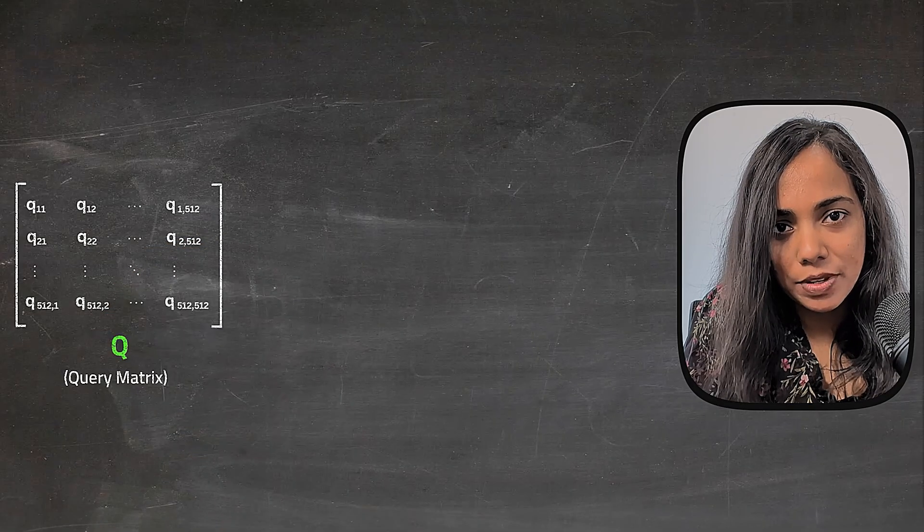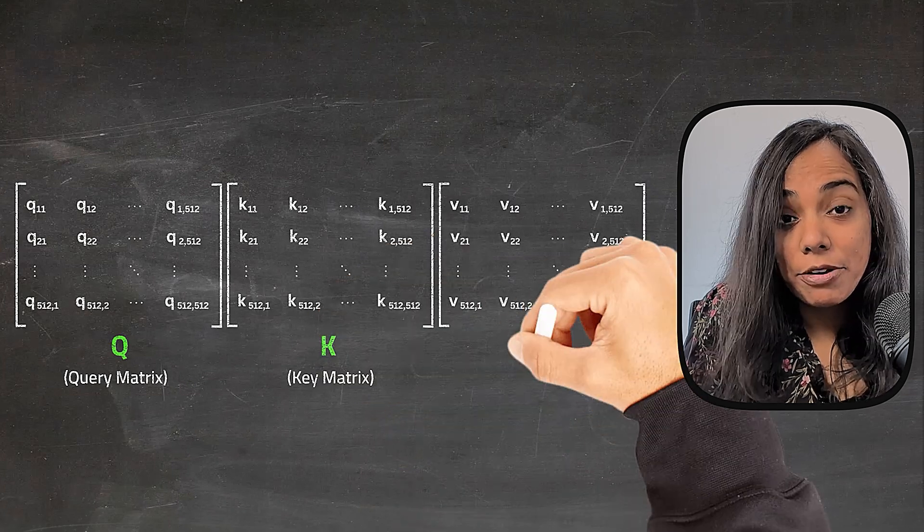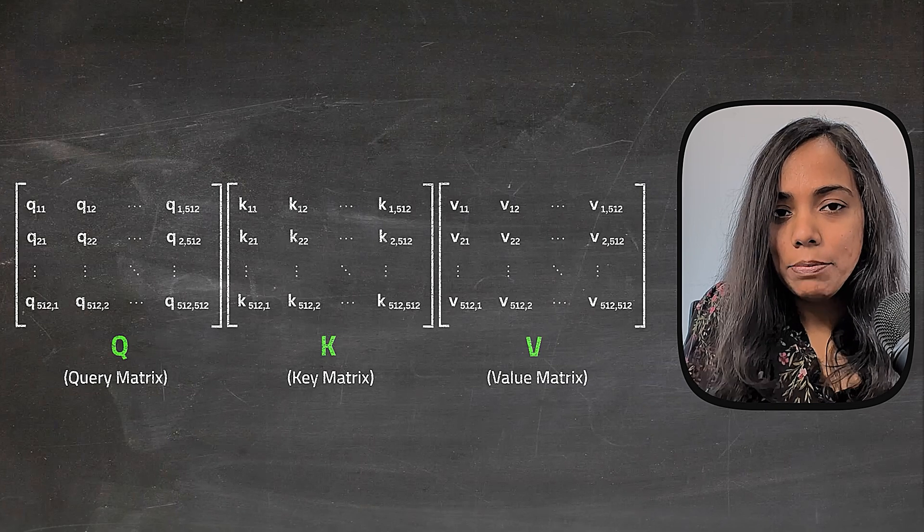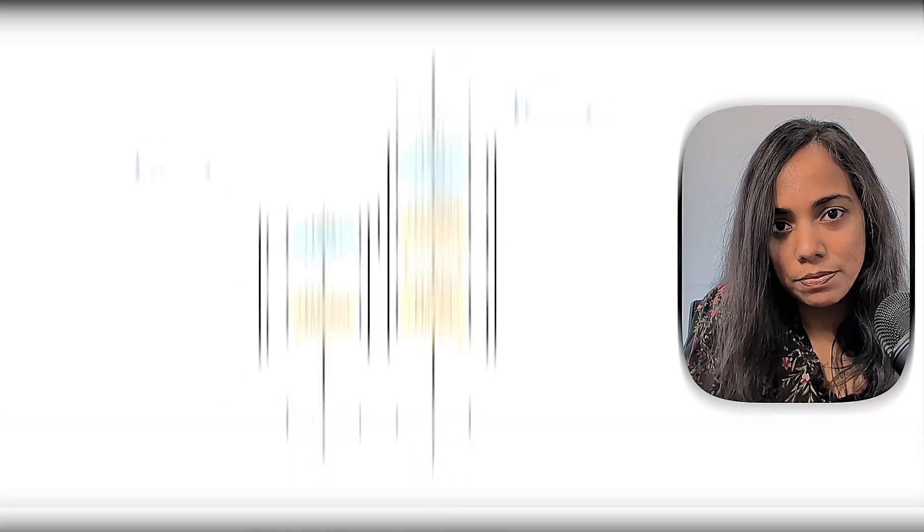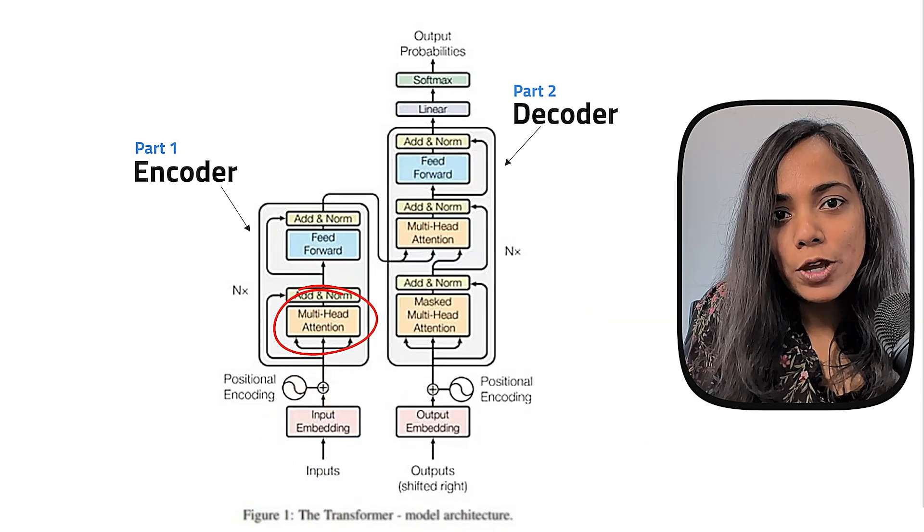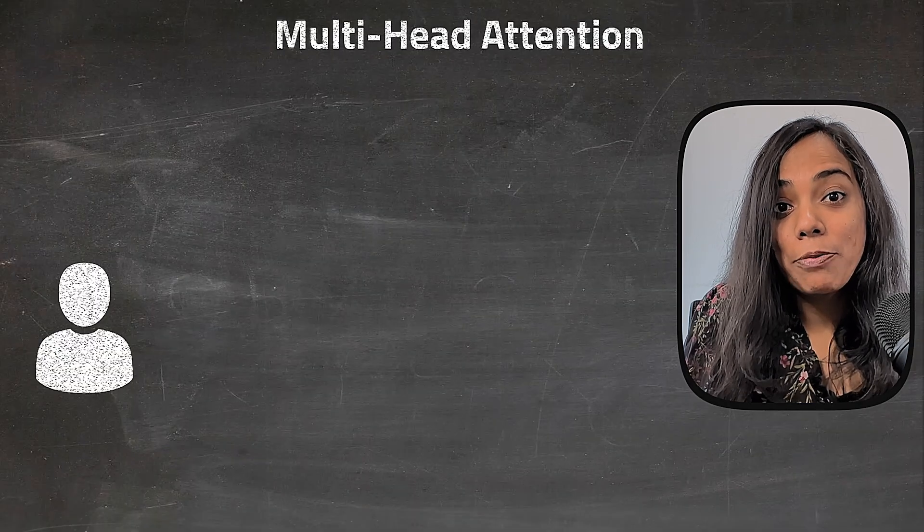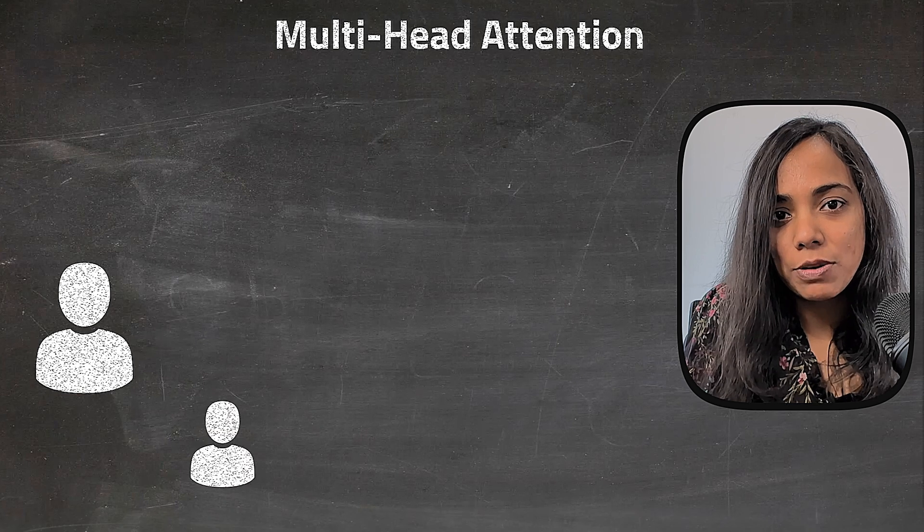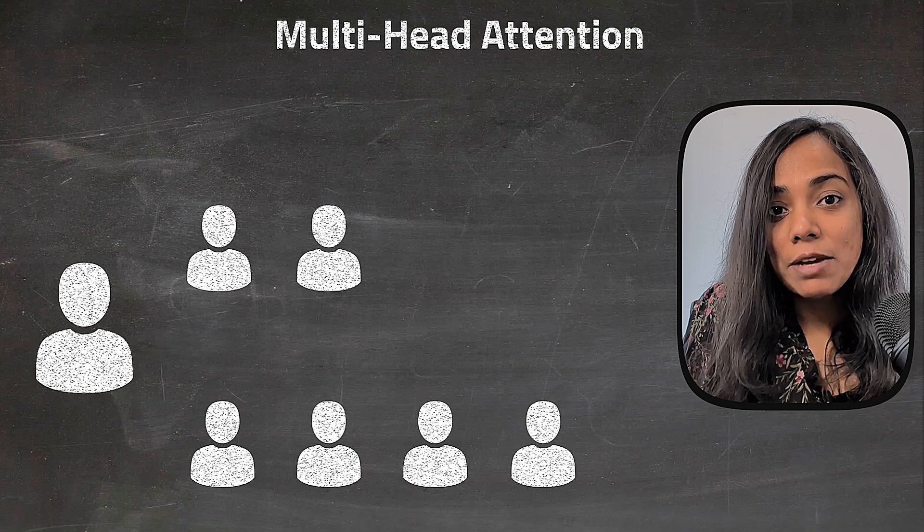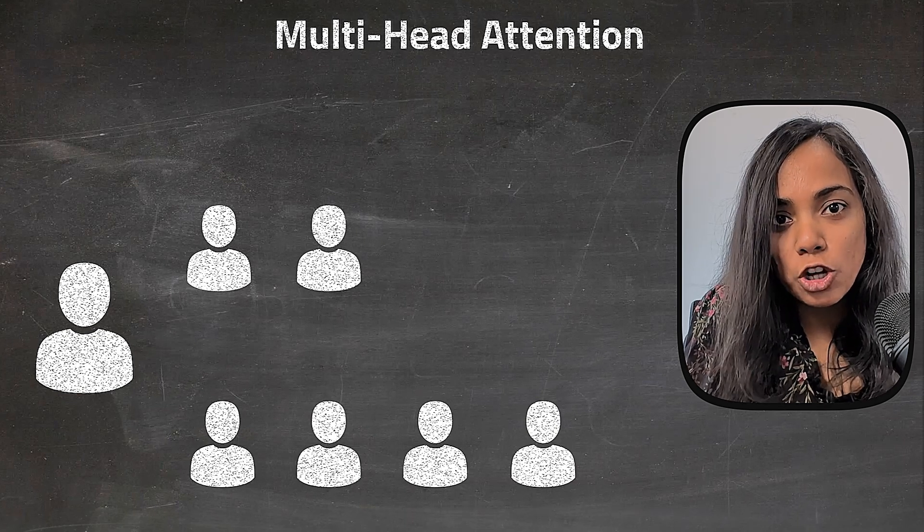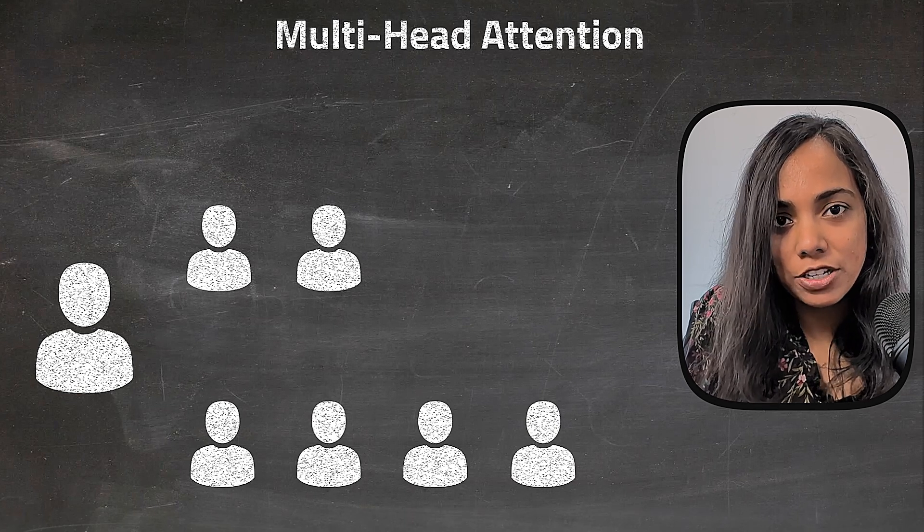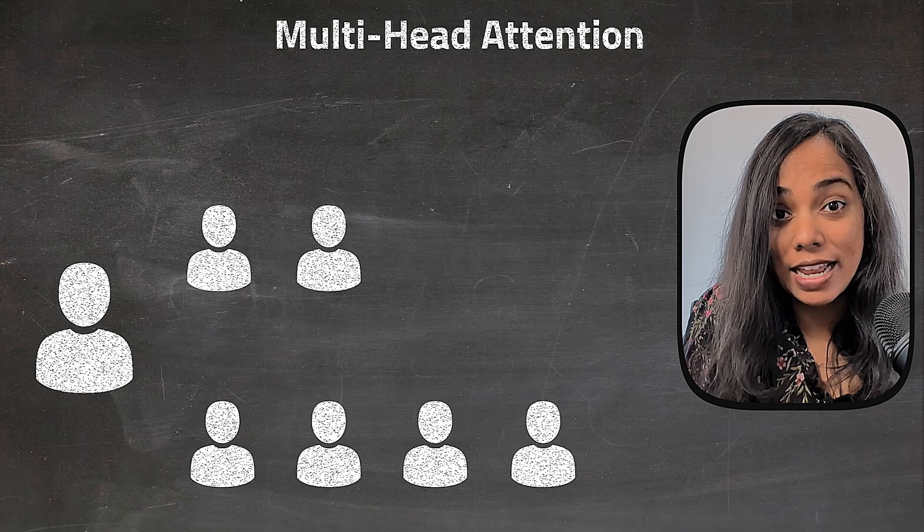This is accomplished by using three different matrices, K, Q and V, which essentially contain the parameters of the model. If you are not sure what parameters of a model mean, please watch our video on what is an AI model. Multi-head here means doing this process of attention from multiple perspectives at once, like asking different experts to analyze the same problem based on their expertise.